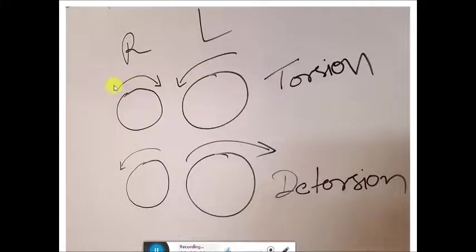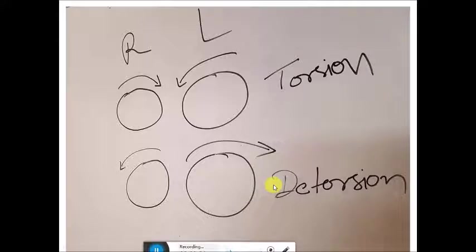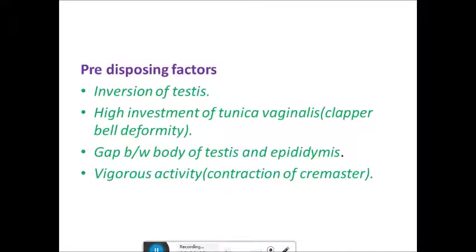Suppose the patient is lying in the lithotomy position: the right testes is rotated clockwise in torsion. When surgery is performed, the testes are derotated — the right one anti-clockwise and the left one clockwise — and then fixed. Three-point fixation is done in the dartos space.